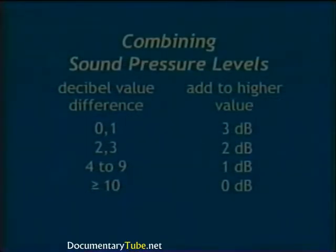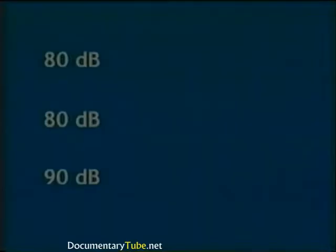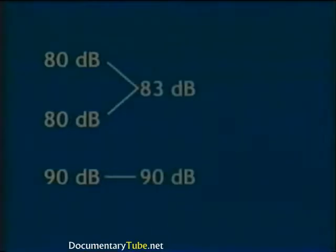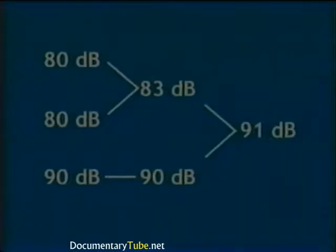Here's an example combining three sound pressure levels. The typical procedure is to combine the smallest values first, then work up. Starting with the two 80 dB levels: their difference is zero, so add 3 dB to 80 dB to get 83 decibels. Then the difference of 83 dB and 90 dB is seven, so add 1 dB to 90 dB for a grand total of 91 decibels.